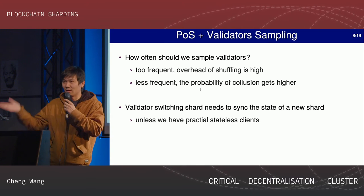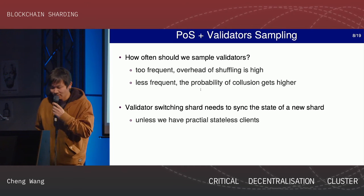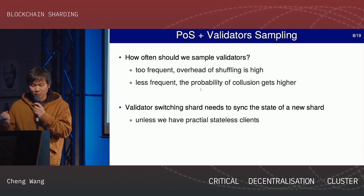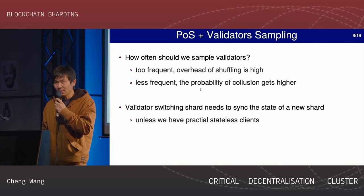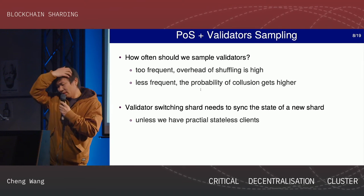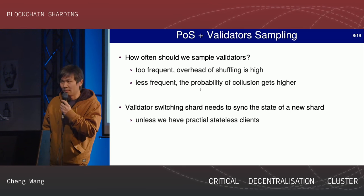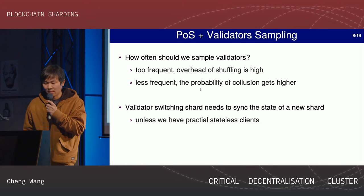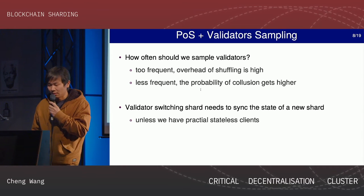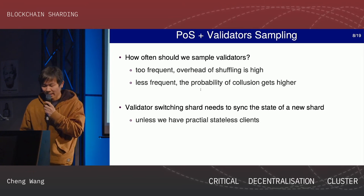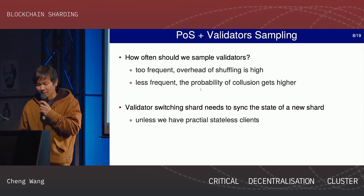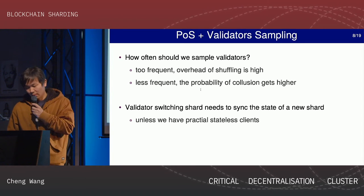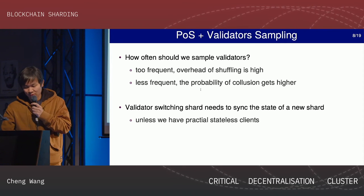There are some ways to ease this problem. One solution is to use stateless clients, which is a good way to solve this. But the problem is stateless clients are not very practical at the moment. For Bitcoin, there's quite a lot of research but it's still not practical. For Ethereum, it will be even more tricky because smart contracts are more complicated. Ethereum is doing some research using Merkle tree proofs for this, but there's quite a bit of overhead because the Merkle tree depth is pretty high. Whether we can have practical stateless clients in the near future is also an open problem.